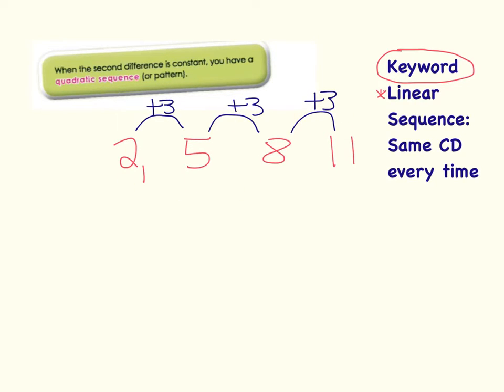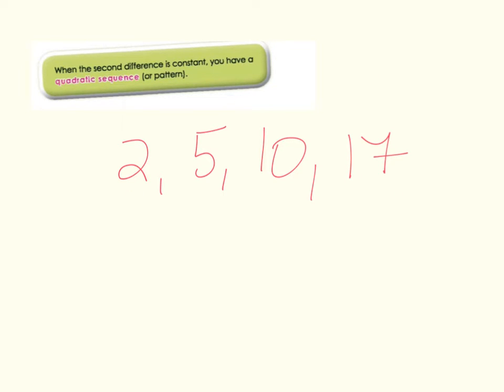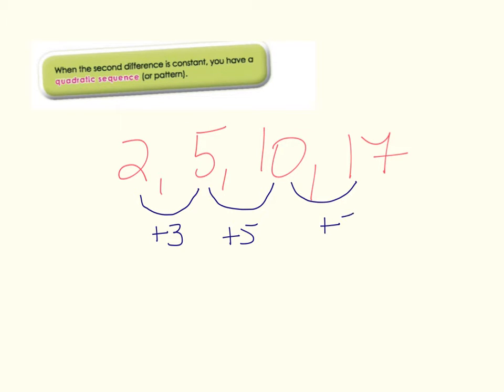But what happens if a sequence is not like this? Here I'm given the sequence 2, 5, 10, 17. Let's look first at the common difference. The difference between 2 and 5 is plus 3, between 5 and 10 is plus 5, and between 10 and 17 is plus 7. So immediately I can say this is not a linear sequence — the first difference is not the same.